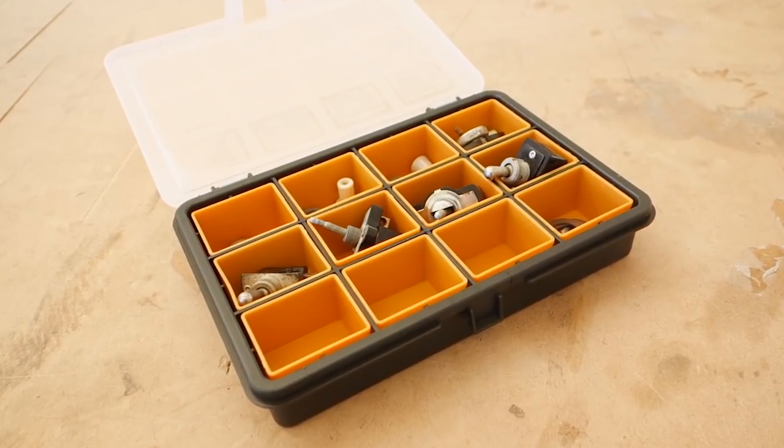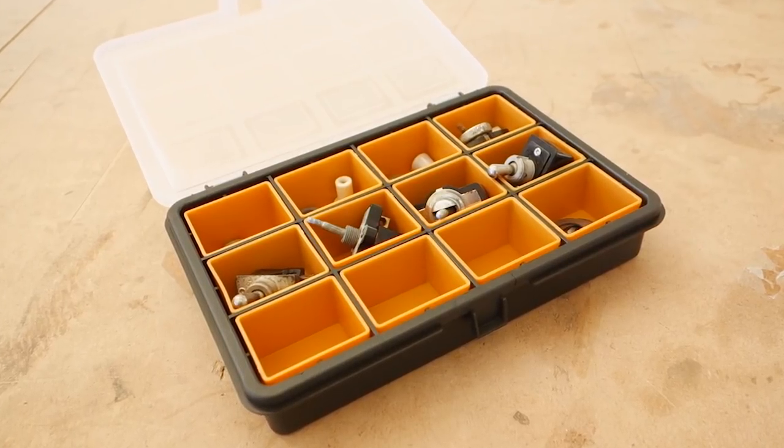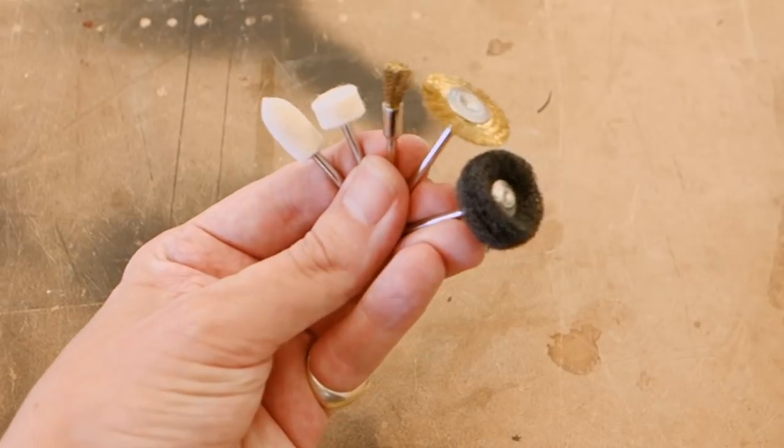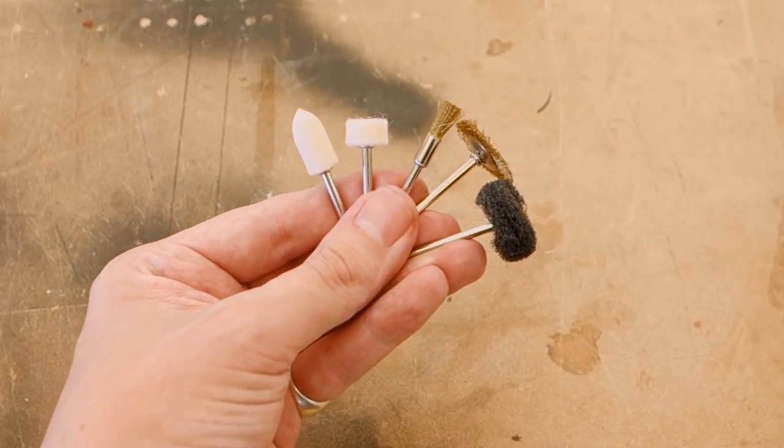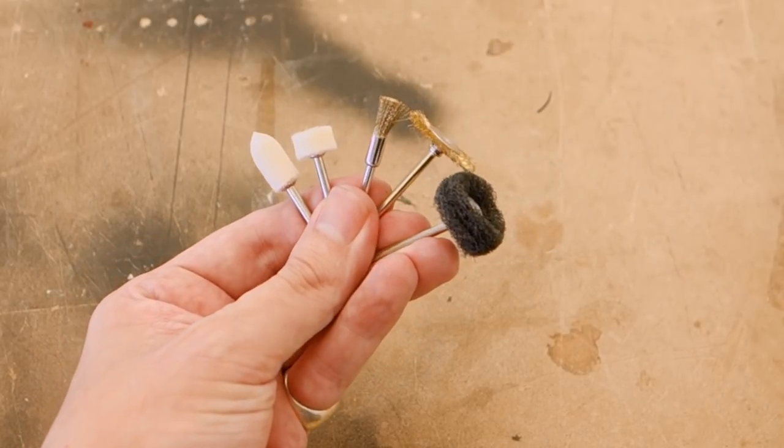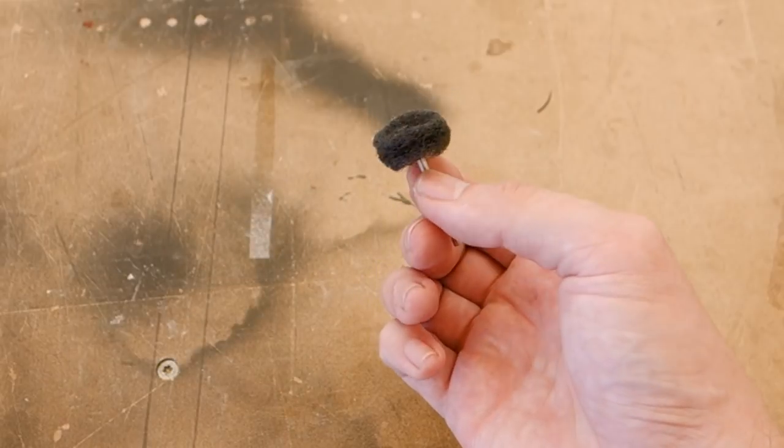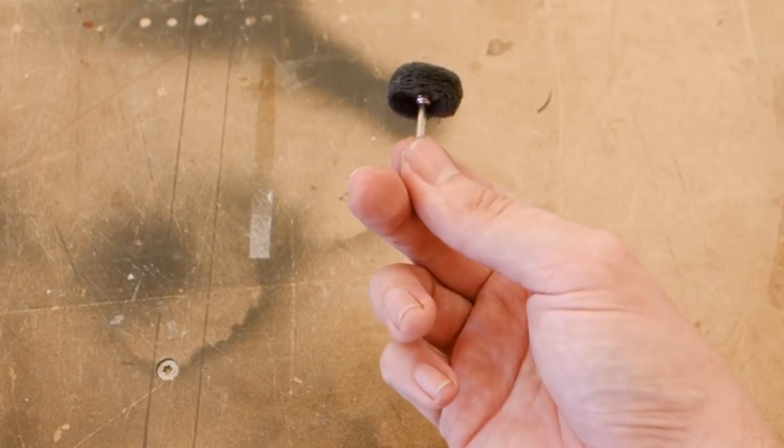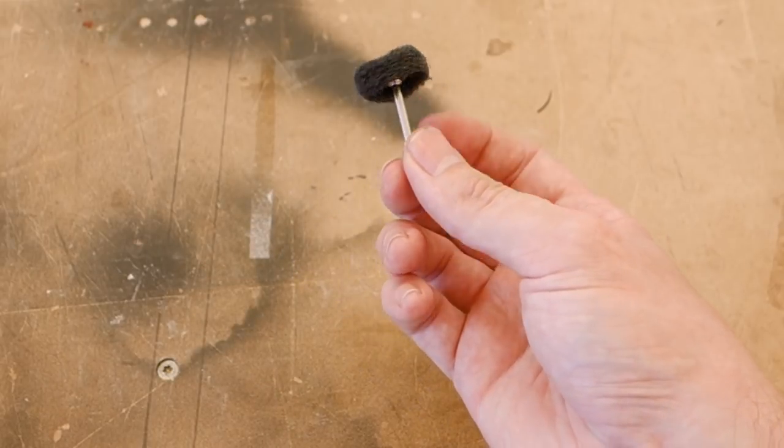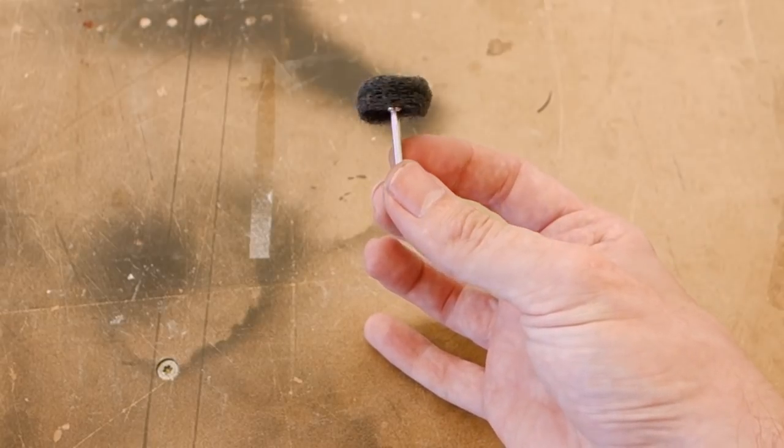For cleaning and getting these switches in tip top shape, we're going to use a wide variety of tools. Our main tool will be using a Dremel with various brush and polishing attachments. I really like this small Scotchbrite attachment for quick and easy surface cleaning. It's exactly like a Scotchbrite pad, but in a handy Dremel form factor.